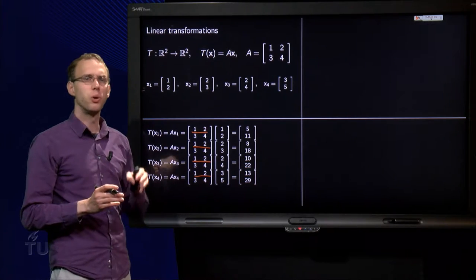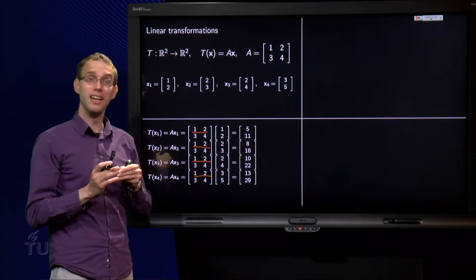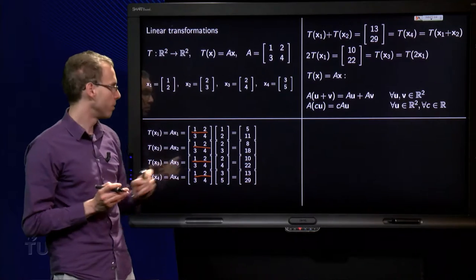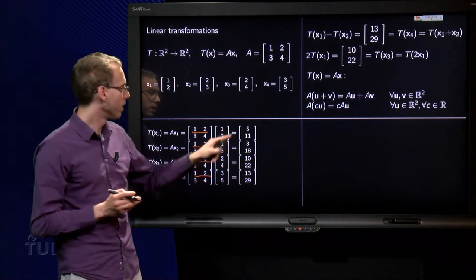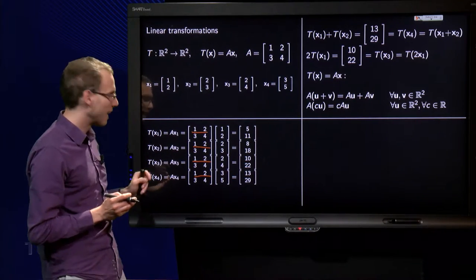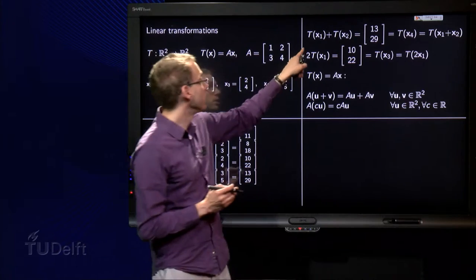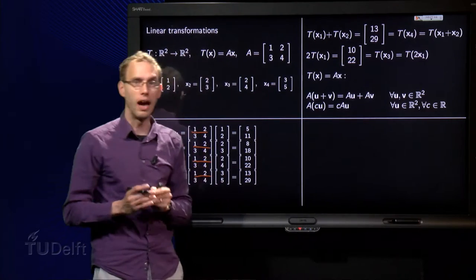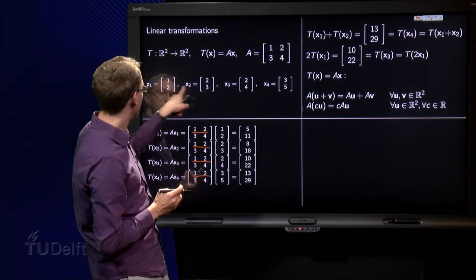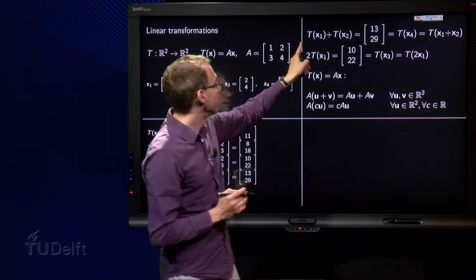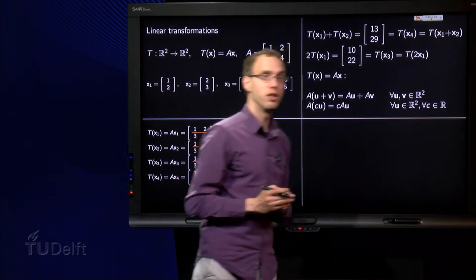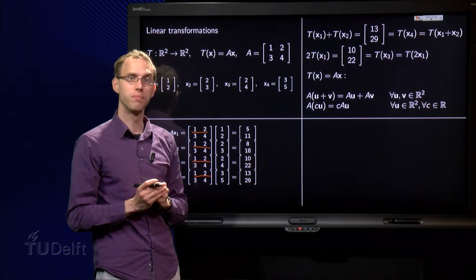Why do we need all those? Well, to illustrate the property of linear transformations. Because we see T of x1 plus T of x2, this is the sum of these two, equals 13 and 29, and it happens to be exactly the same as the image of x4. So T of x1 plus x2 happens to be the same as T of x4. But x4 equals x1 plus x2. So what do we see here? The image of x1 plus the image of x2 is the same as the image of x1 plus x2. Well, that's a coincidence.